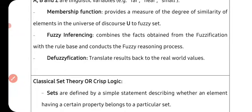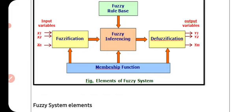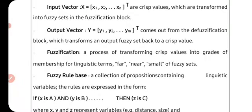Fuzzy inferencing combines the facts obtained from fuzzification with the rule base and conducts the fuzzy reasoning process. Fuzzy inferencing applies fuzzy rules to the fuzzified set and carries out the fuzzy reasoning process. Defuzzification translates the result back to the real-world value — it transfers the fuzzy variable into a crisp set.